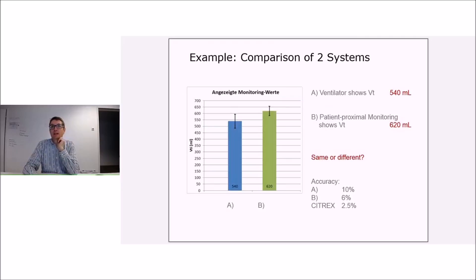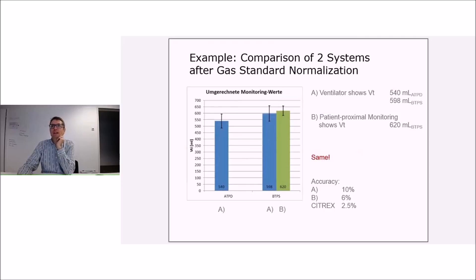So the final analysis was actually the root cause was the ventilator which was running in a different gas standard than the proximal flow measurement. It was running in ATPD showing 540, and the proximal flow sensor was measuring or displaying at 620 saturated. But when we compensated that to BTPS, it was 598. Together with the accuracy indices, and we can see that very nicely here with the uncertainties of the measurement, we could demonstrate that this was the same measurement.